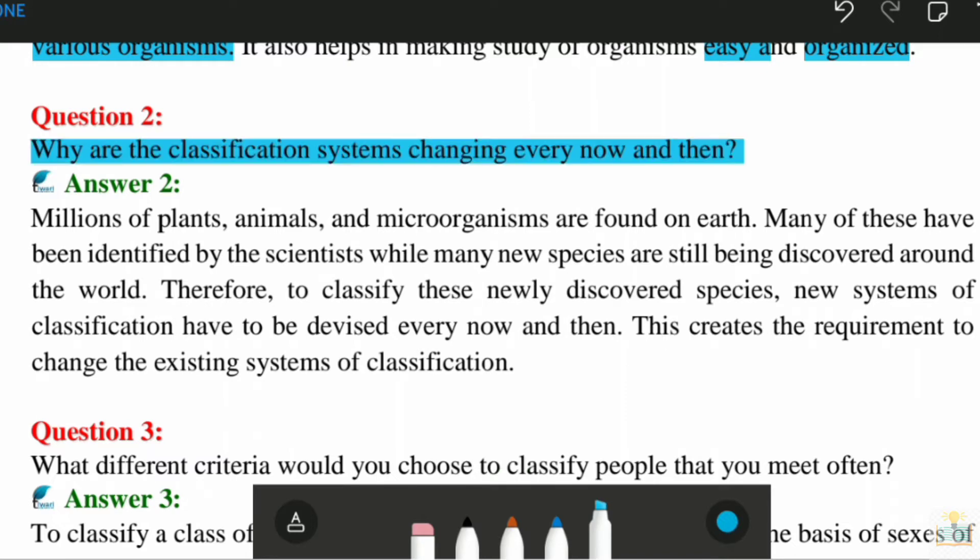Okay, so basically this question asks about two million plants and animals and microorganisms are found on the earth. Two million of plants, animals, whatever found on earth - the number is 1.7 million.